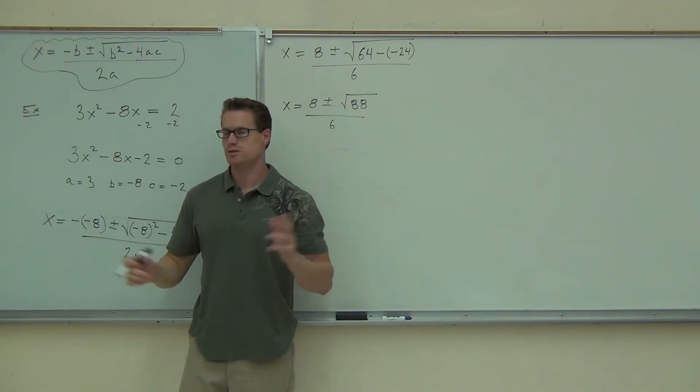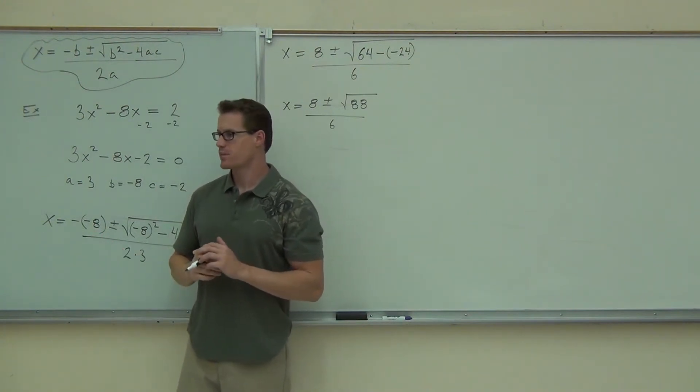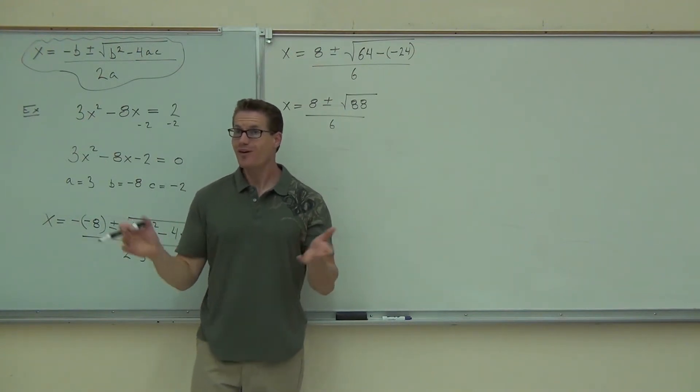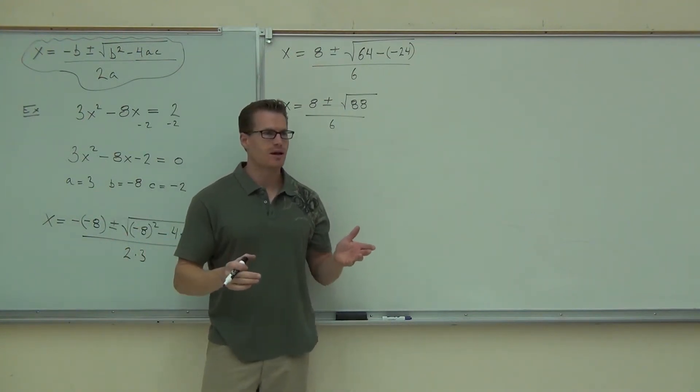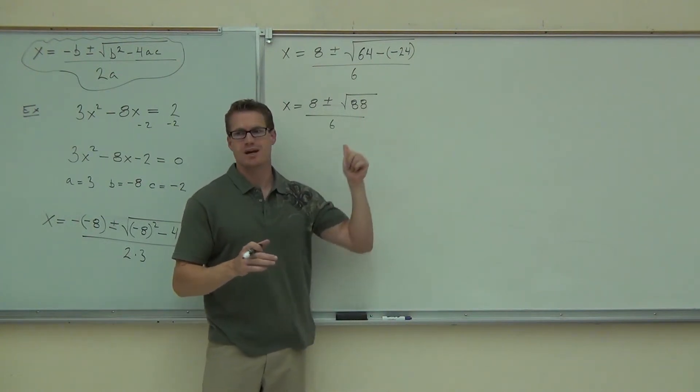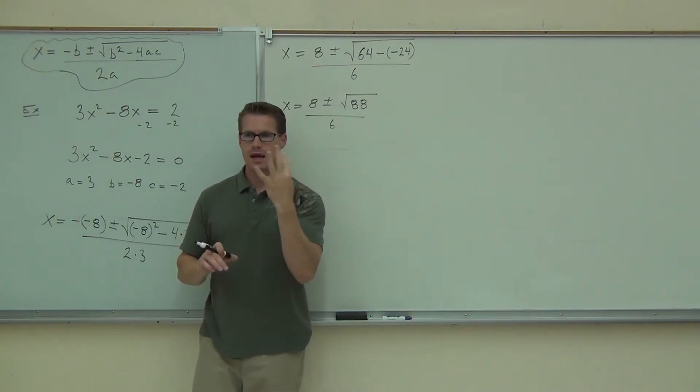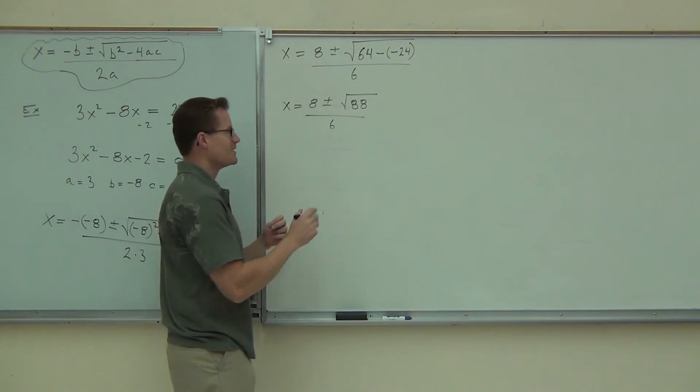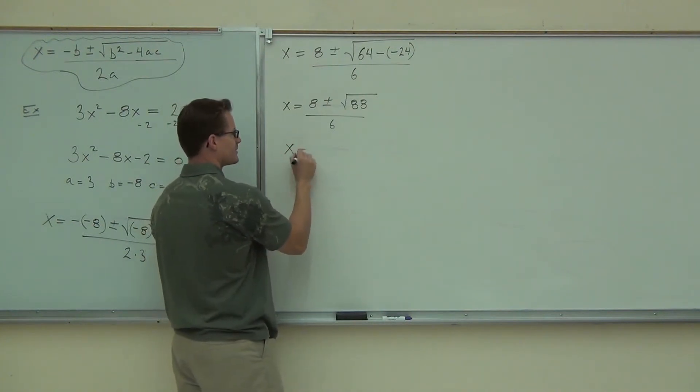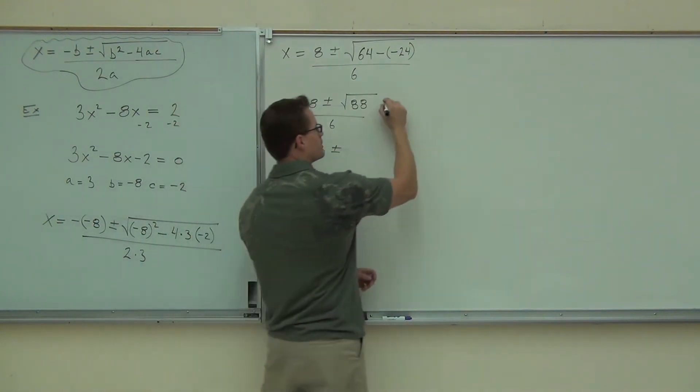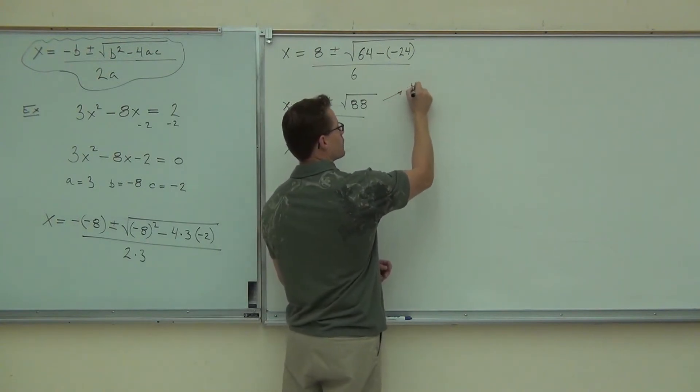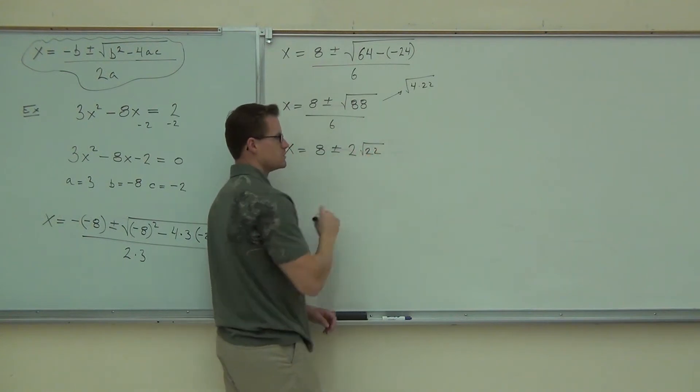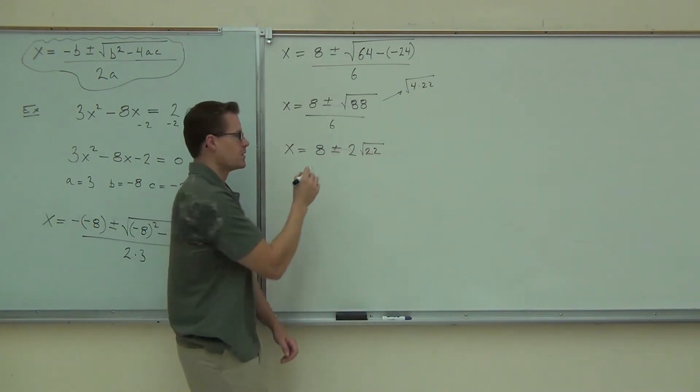Done? No. Go ahead. Can you simplify the radical like we did in every other step? Yep. Now, I can't say, what's the square root of 88? And you go, oh, it's 7. Well, that's not going to work, right? But we can find out what that is. What number goes into 88? 4. 4 and 22. You okay with that? You sure? So this is 8 plus or minus. Notice that this is 4 times 22. That's going to give you 2 root 22. Do you see where the 2 root 22 is coming from, ladies and gentlemen? All over 6.